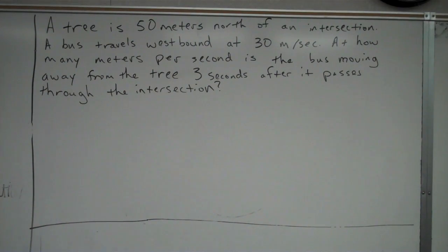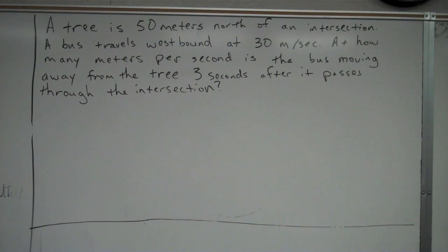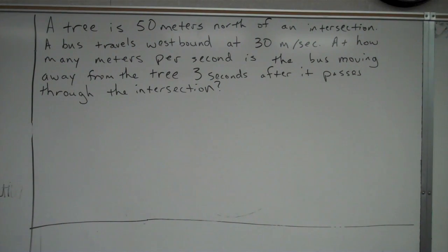It says: a tree is 50 meters north of an intersection. A bus travels westbound at 30 meters per second. At how many meters per second is the bus moving away from the tree three seconds after it passes through the intersection?